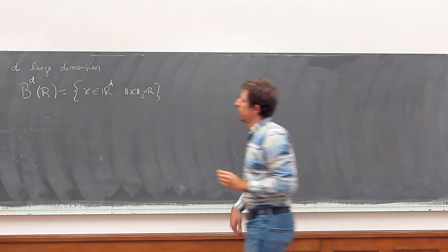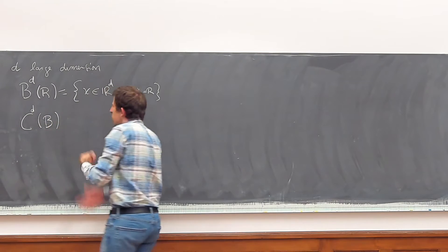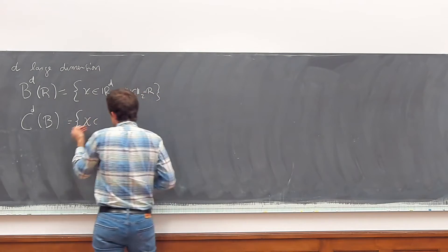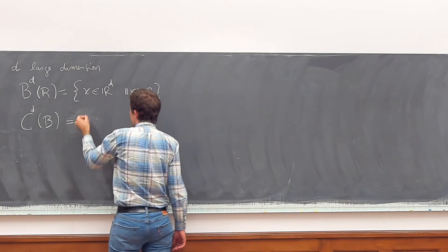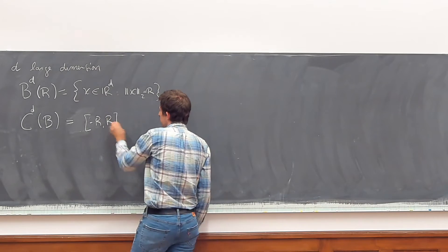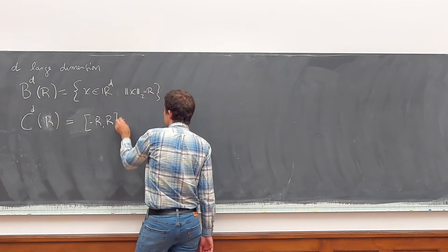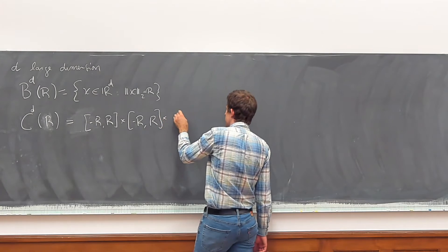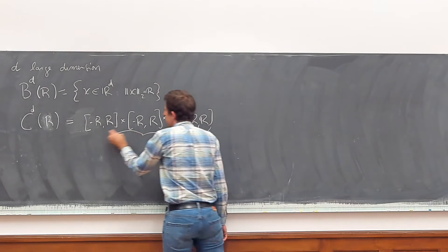Let's take the cube — in high dimensions we call it a hypercube. Let's write it as the Cartesian product of [-R, R], also of radius R, but of course the side length is 2R, so it's R times d.